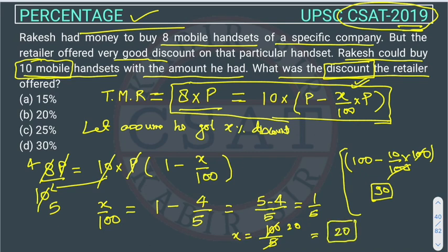So the answer is a 20 percent discount offered to Rakesh, and the answer to this question is option B. I hope you understand everything. If you don't, please send us a message through the comments and I will explain this question personally in a one-to-one session. Thank you.